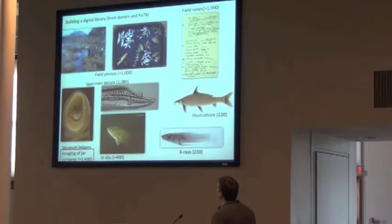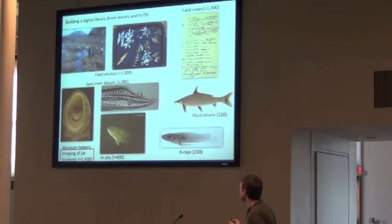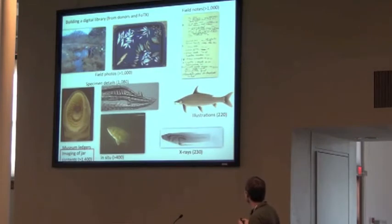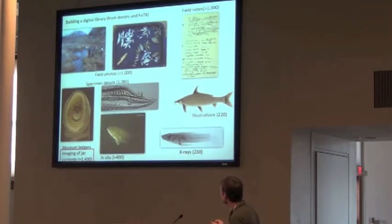So we're building a digital library. A lot of these are coming from our data donors, and a lot of them are coming to us. We have field photos that show habitat and collectors in the field. They show specimens before they actually hit the jar, field notes, illustrations by Joe Cumballari that are anatomically accurate, x-rays, NC2 photographs by Gerald Sikas, images of specimen details such as John Codia, Lamprey, and Malthier.